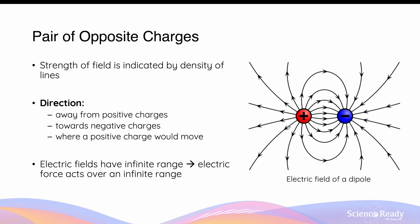Similar to point charges, the electric field produced by a pair of charges also has an infinite range. In electrostatics, the term dipole refers to the electric field produced by two opposite and equal charges. This diagram illustrates the electric field lines produced by an electric dipole, where the charges are opposite and equal in magnitude — that is, they have the same number of coulombs.